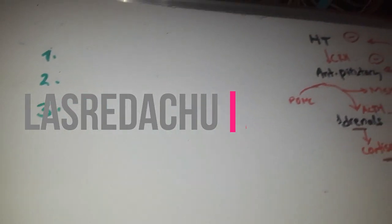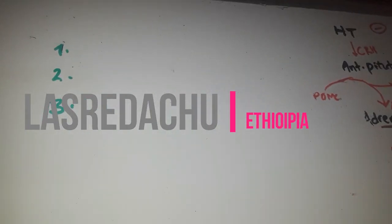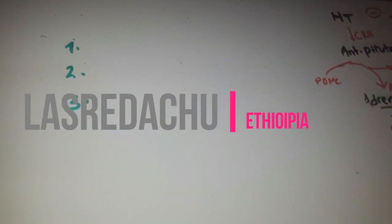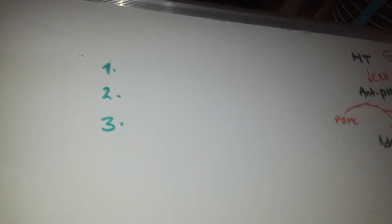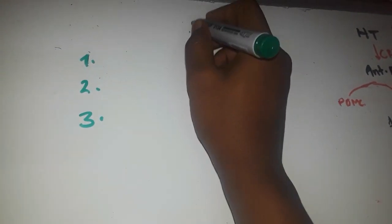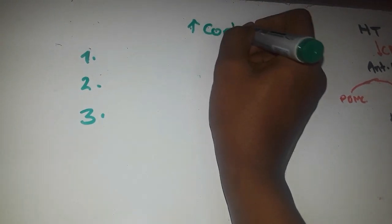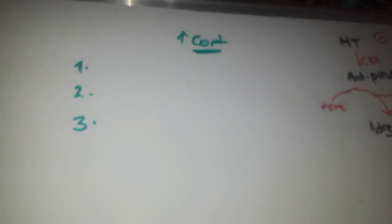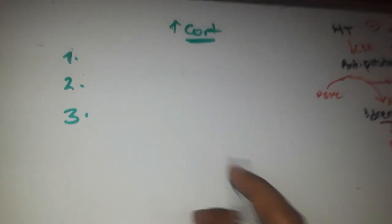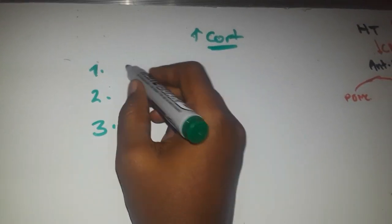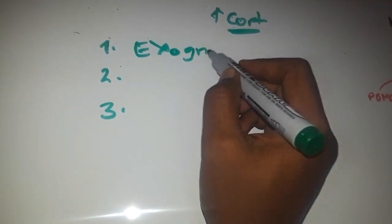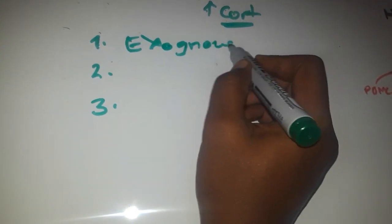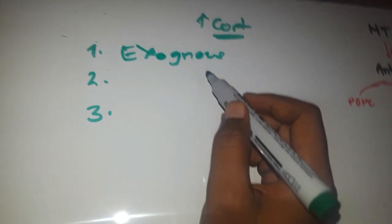Good morning, Dr. Topia. Today we continue our discussion on Cushing's syndrome, and now we talk about the causes of Cushing's syndrome — a clinical syndrome caused by increased cortisol in our body. The causes can be classified into three categories. The first is exogenous: people who are taking steroids for many reasons, such as chronic steroid therapy.